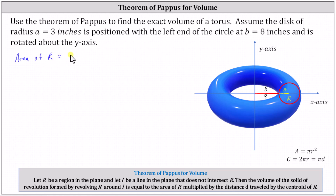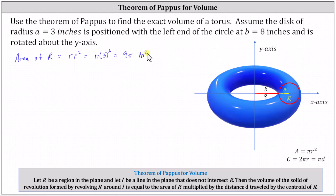Let's begin with the area of the region R, which is the area of the circle. We know the area of a circle is π r². In our case, r is equal to three inches. Therefore, the area of R is equal to π times the square of three, which gives us nine π square inches. We want exact values because we want the exact volume of the torus.